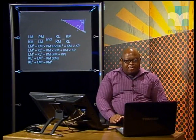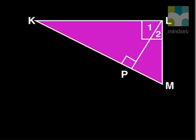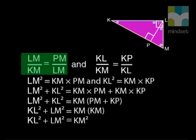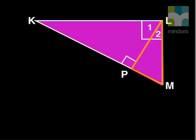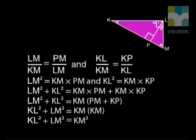Now, look at this carefully. We can use the proportion theorem to say that the sides are proportional. First, in triangles KLM and KPL, LM divided by KM equals PM divided by LM. In triangles LPM and KLM, KL divided by KM equals KP divided by KL.